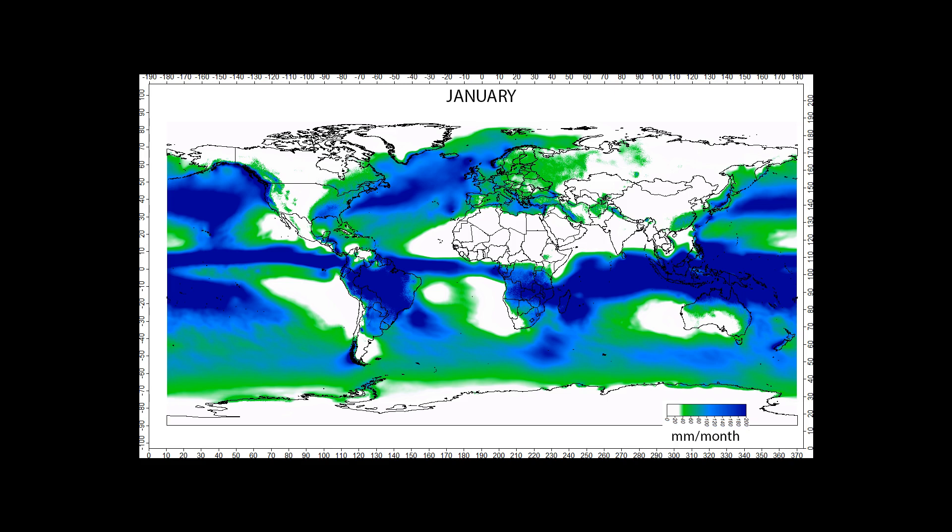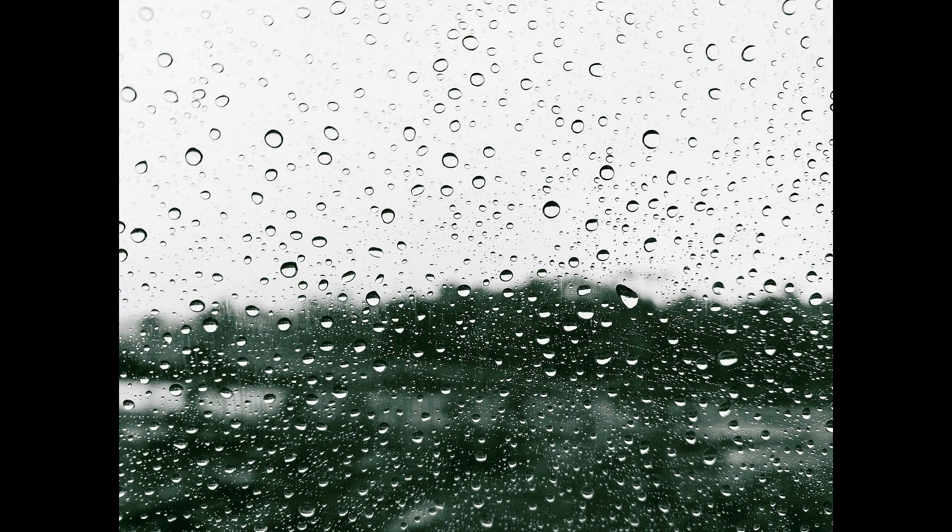Precipitation is a major component of the water cycle and is responsible for depositing fresh water on the planet. Approximately 505,000 cubic kilometers (121,000 cubic miles) of water falls as precipitation each year: 398,000 cubic kilometers (95,000 cubic miles) over oceans and 107,000 cubic kilometers (26,000 cubic miles) over land. Given the Earth's surface area, the globally averaged annual precipitation is 990 millimeters (39 inches), but over land is only 715 millimeters (28.1 inches).